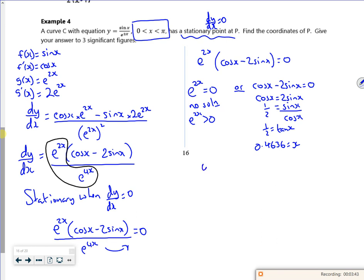If I sub that back into the original equation, making sure I'm in radians, the calculator tells me it's 0.177. So we know it's stationary.